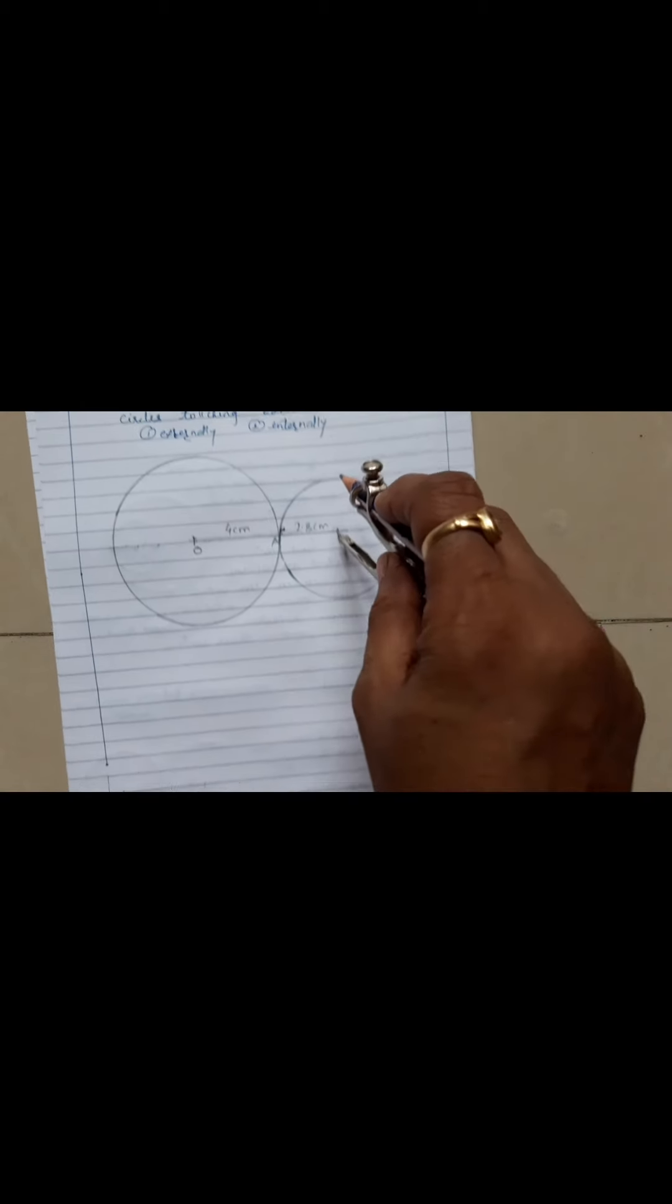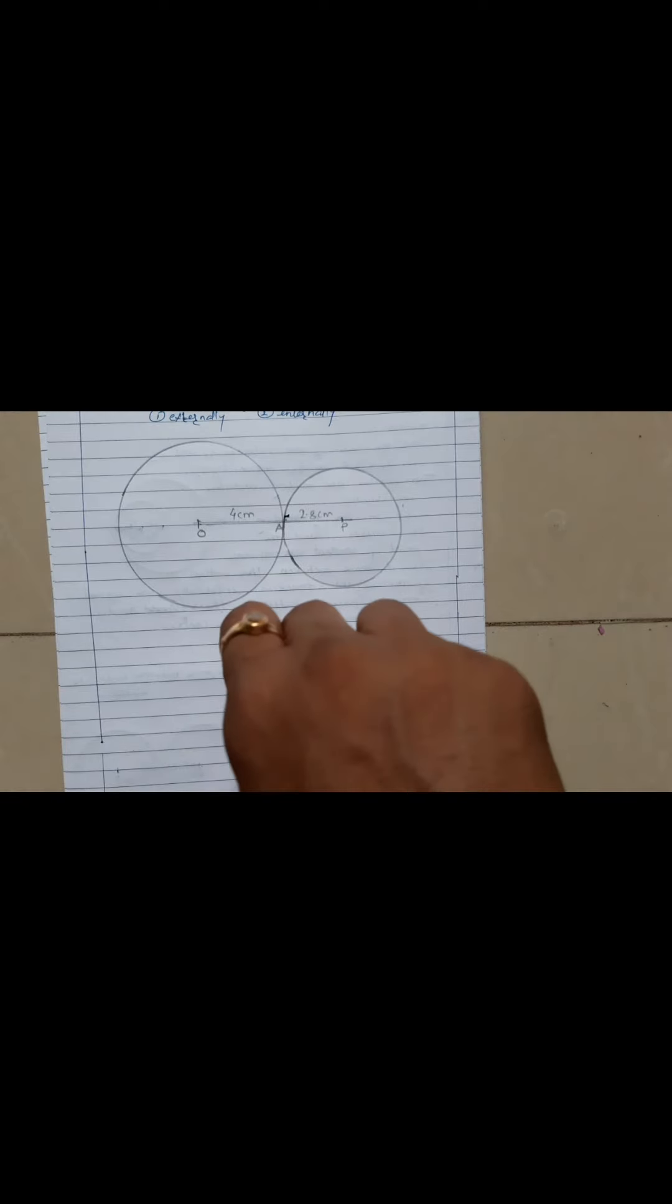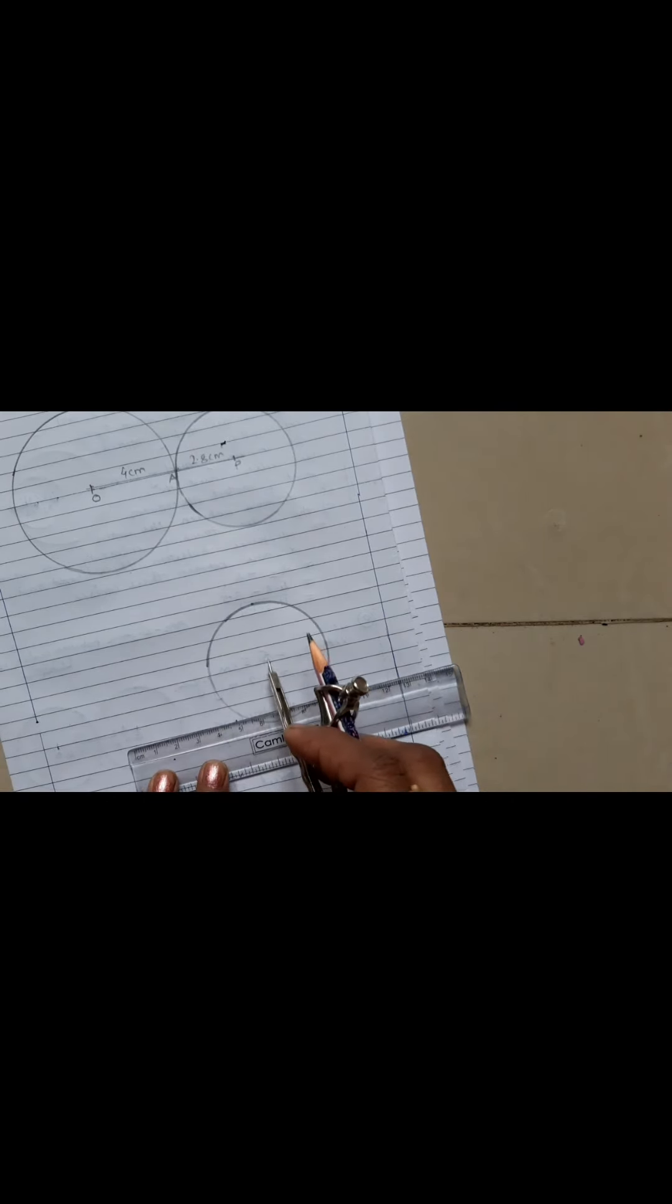So what we will do: again, I will draw now 2.8 only because I am having that measurement with me. This is the center. Now we have to draw internally touching circle, so we will take other point also here inside.